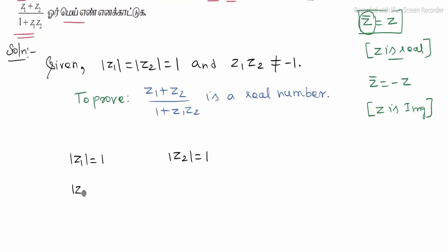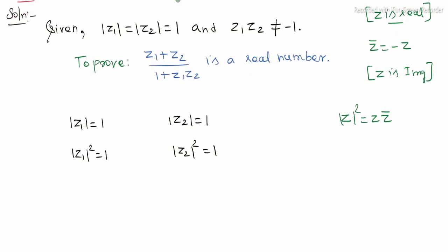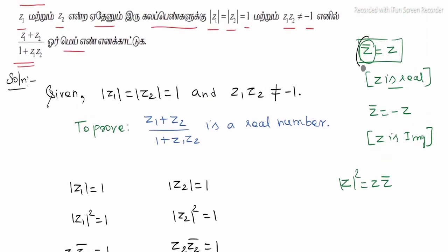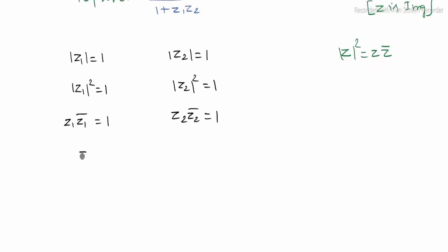We know that modulus of z1 squared is equal to 1 and modulus of z2 squared is equal to 1. We know the property that modulus of z squared can be expressed as z into z bar. So z1 into z1 bar is equal to 1, and z2 into z2 bar is equal to 1. From these we get z1 bar is equal to 1 by z1, and z2 bar is equal to 1 by z2.